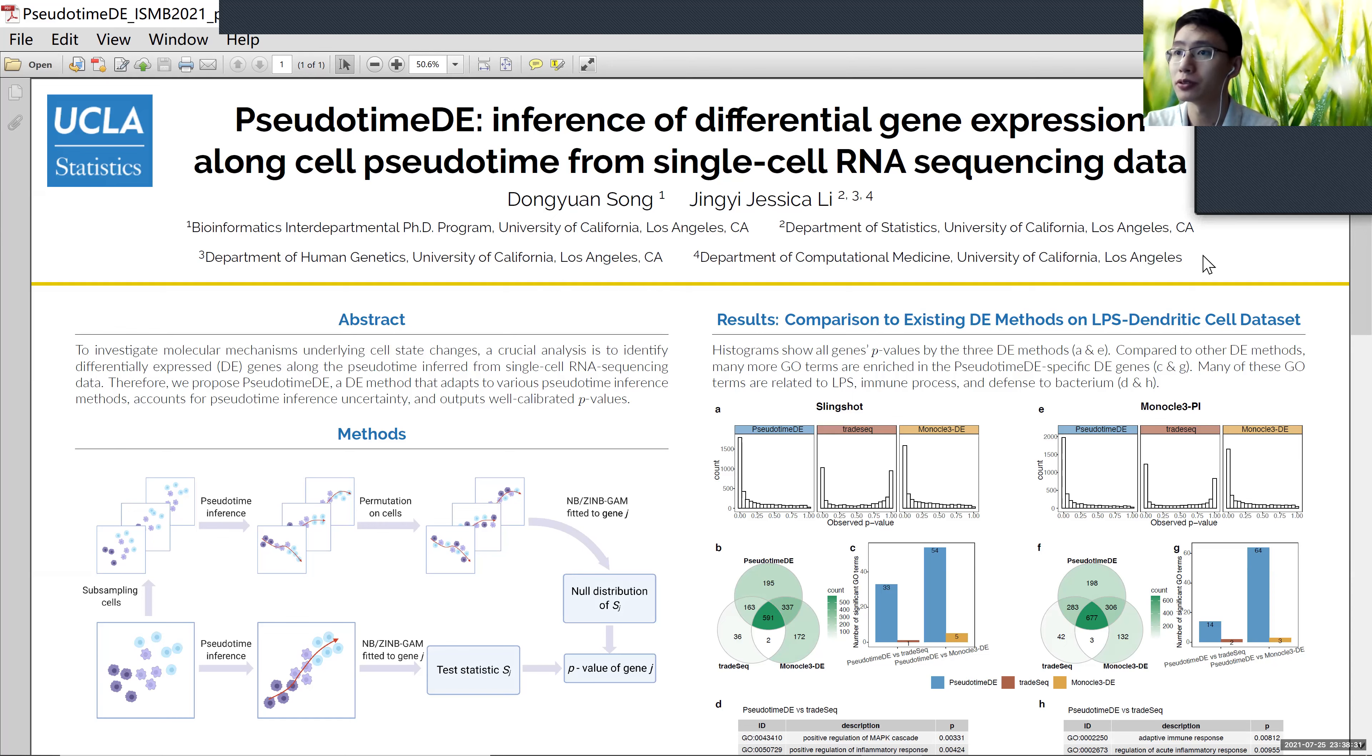Therefore, we propose PseudotimeDE, a DE method that can adapt to various pseudotime inference methods, account for pseudotime inference uncertainty, and output well-calibrated p-values.